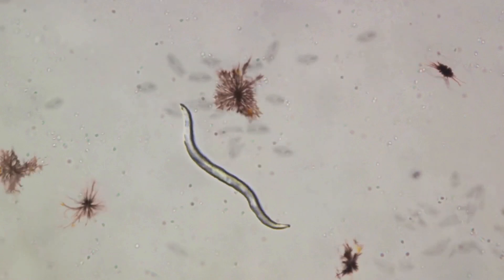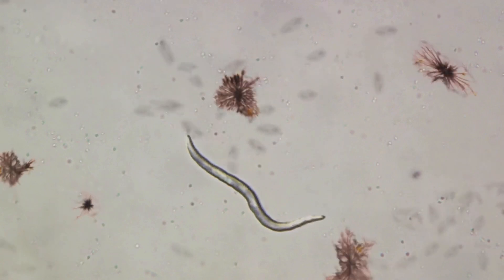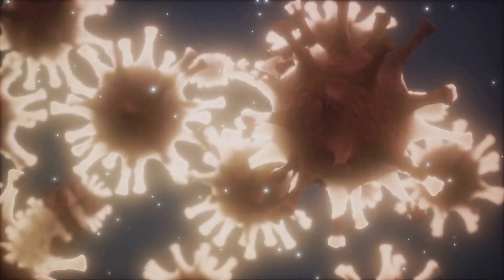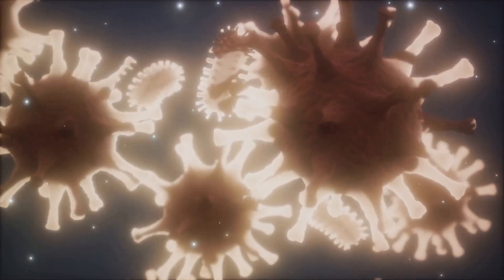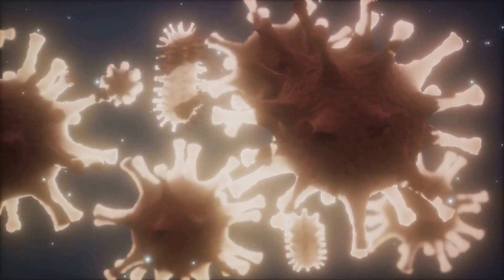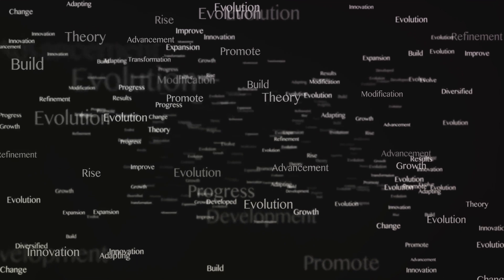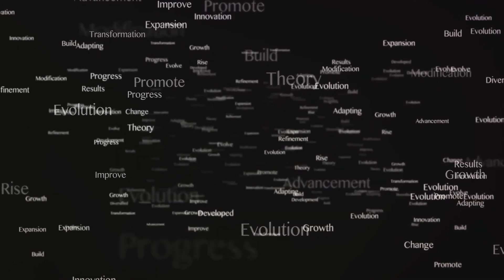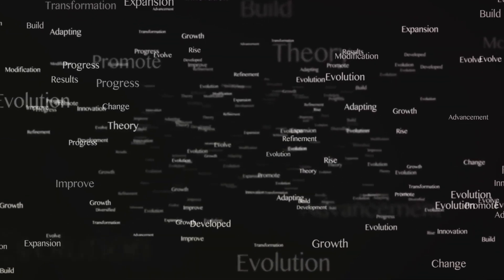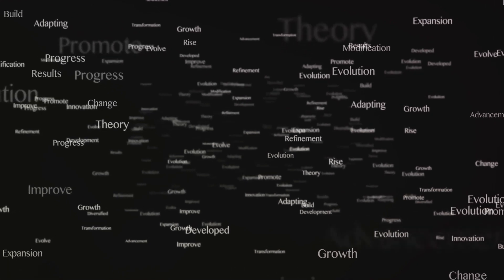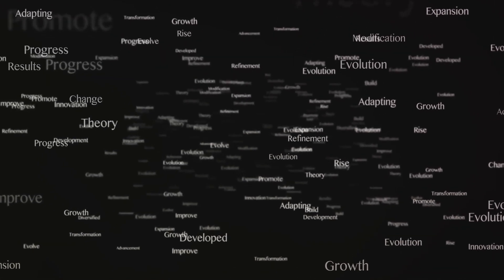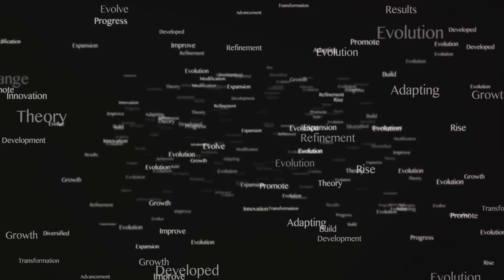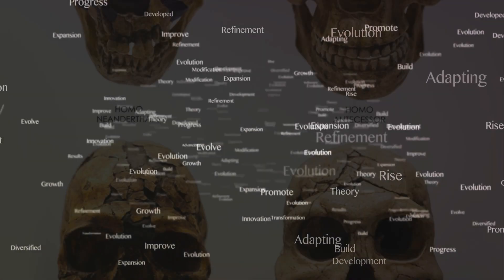Simple molecules began to group together, forming the first primitive cells, floating in what we often refer to as the primordial soup. These cells, through the remarkable process of evolution, became the first living organisms capable of reproduction and adaptation. From these humble beginnings, life on Earth began to evolve and diversify.